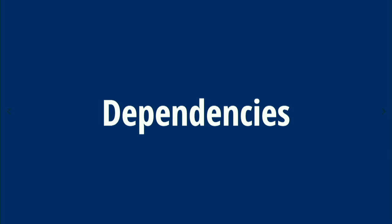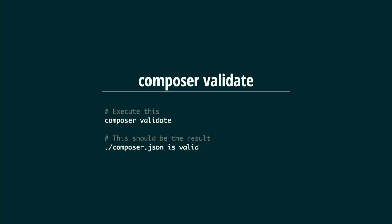About dependencies — we are using Composer. The first thing you need to do when you inherit a project is run the `composer validate` command. You should see 'your Composer file is valid.' If something is missing or you have an extra comma, you will see it here.